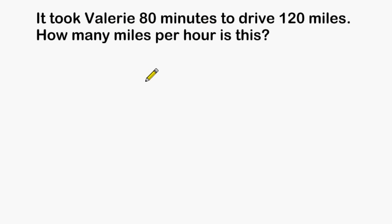Another way to solve this problem is by taking 120 miles and dividing it by 80 minutes to see how many miles are covered per minute. 80 can be divided into 120 one time. 1 times 80 is 80 and the difference of 120 and 80 is 40.